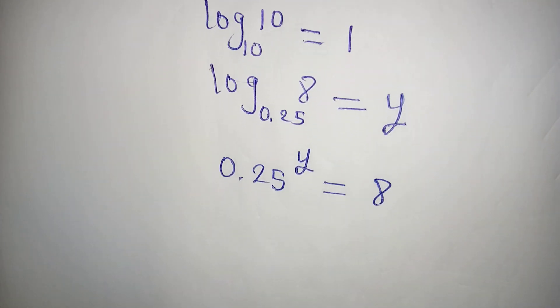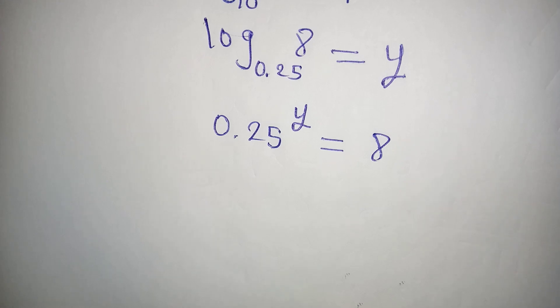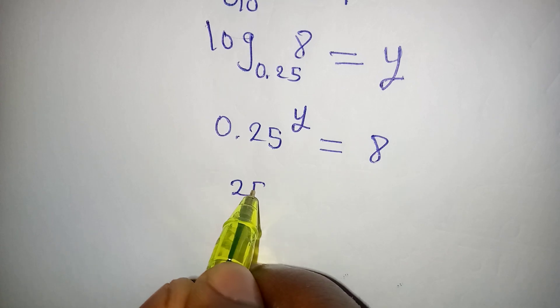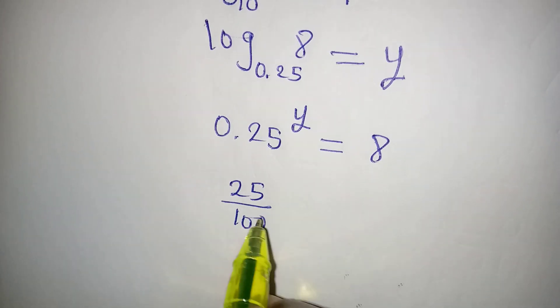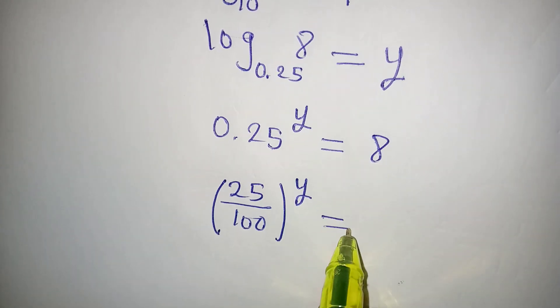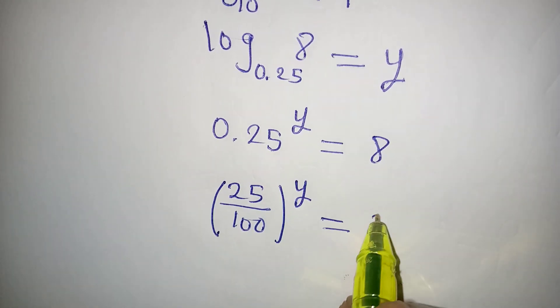And then the next thing is, this 0.25 is the same thing as 25 over 100, and this is raised to the power of y and it will be equal to 8.